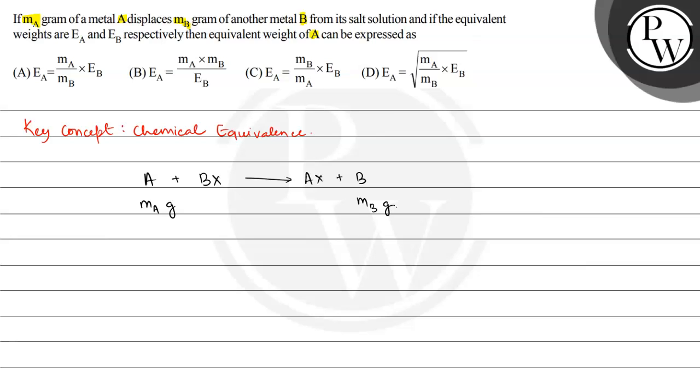One equivalent of A reacts with one equivalent of BX. So we can write that number of equivalents of A is equal to